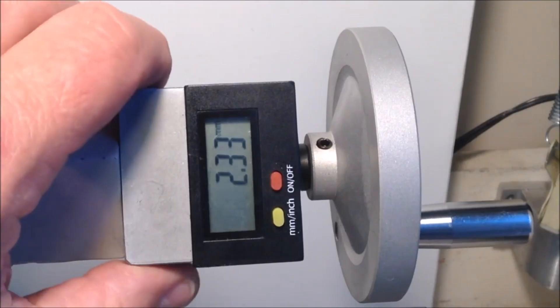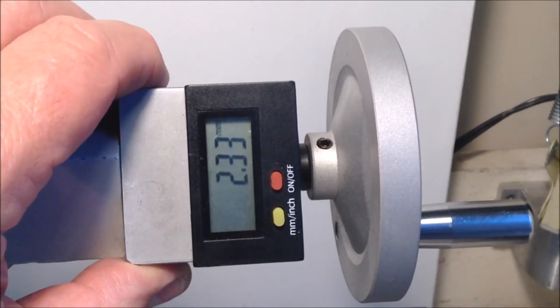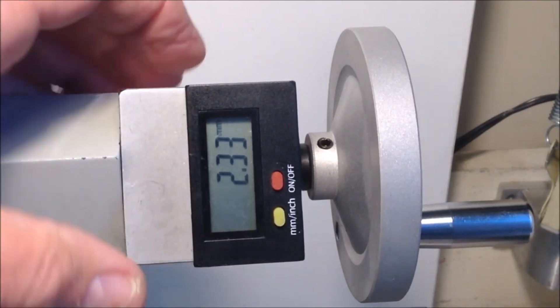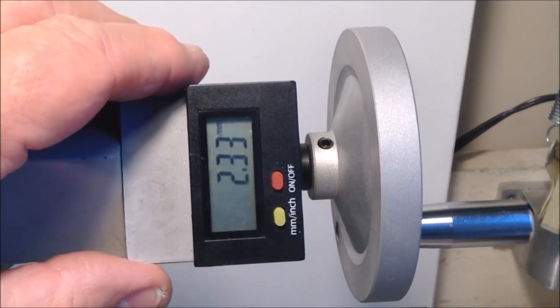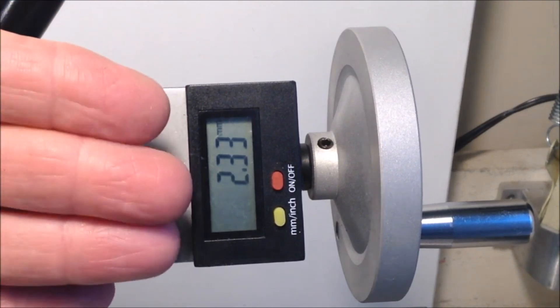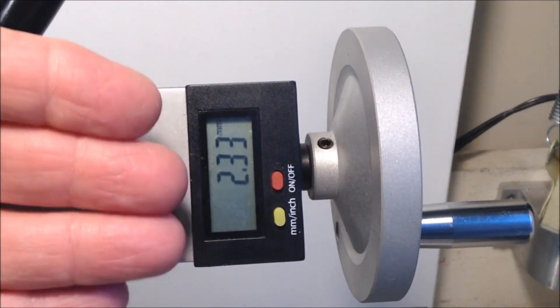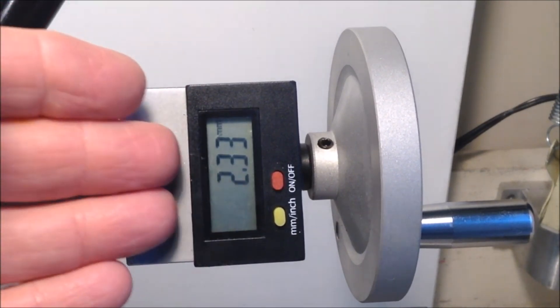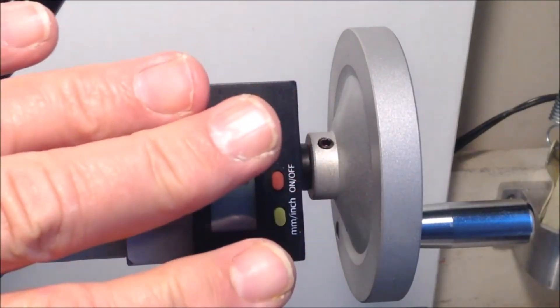If you loosen the set screws on either side of this metal sleeve, you can rotate the whole unit around. I've found, for my needs at least, it's more convenient if I have it tilted this way. I get less glare from the lights and it's easier for me to read it in this position than if it's horizontal.